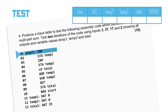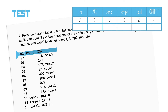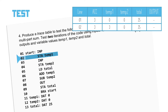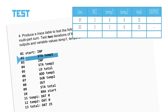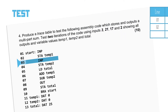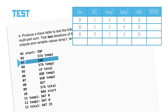Remember that the labels are just making it easier for us to work out which line number we care about. Once the first input command has been executed, the accumulator contains the number 3. The variables temp1 and temp2 are DAT 0, meaning a value of zero — just take a look at their labels on lines 11 and 12. The total variable is on line 13 and starts as 25. There is no output at this point. Line 2 is telling us to store the value of the accumulator in temp1, so temp1 now contains the number 3.